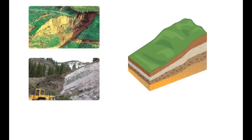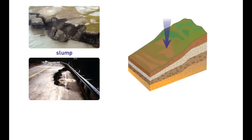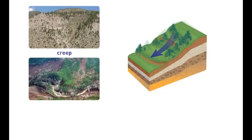Gravity can cause unstable rock material to move suddenly. Landslides and mudflows occur when loose soil and rocks slide down steep slopes. Slump is the sudden movement of a single large mass of rock material. Creep is caused by gravity, but is a slow downhill movement of sediment over time.